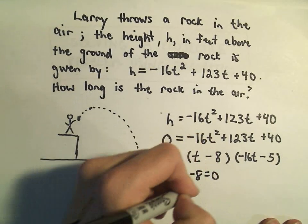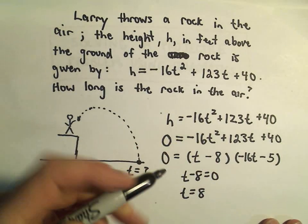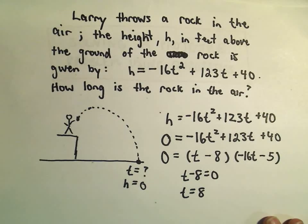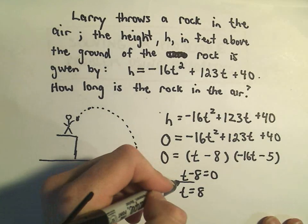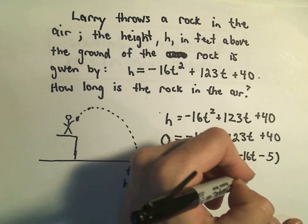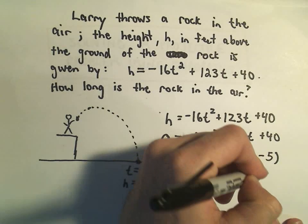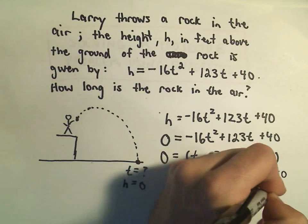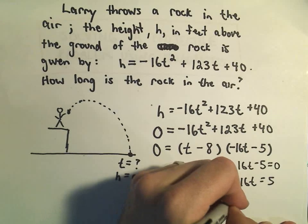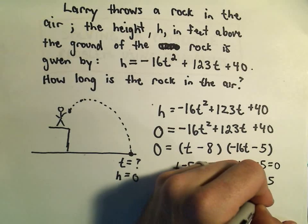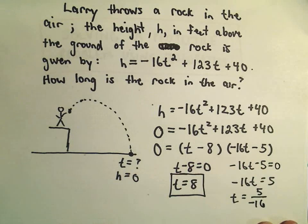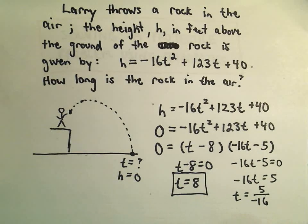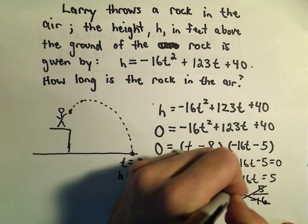So now we just have to set each factor equal to 0. So if I set t minus 8 equal to 0 and add 8 to both sides, I'll get t equals 8 as one solution. If I set negative 16t minus 5 equal to 0, we can add 5 to both sides and then divide by our negative 16 and we'll get t equals 5 over negative 16. But we can't have negative seconds here, so that answer doesn't make sense.